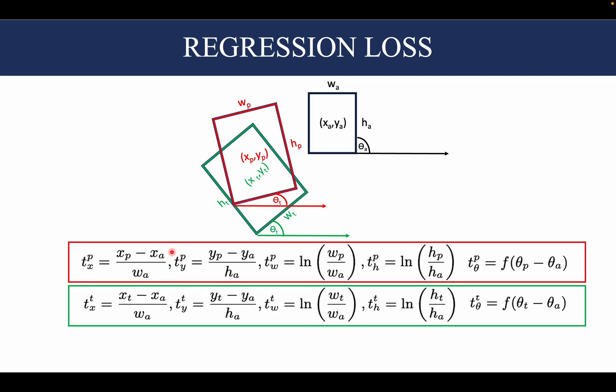A similar computation is done for typ. For the width and height, we take the log of the ratio between the predicted width and the width of the anchor, and similarly for the height. For theta, we take the difference between the predicted and the anchor.